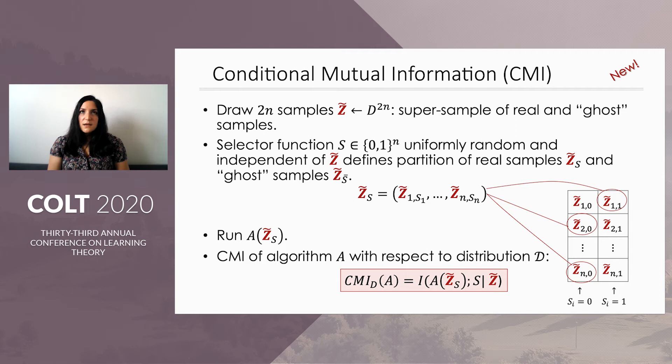Essentially, the CMI asks: how well can we distinguish the real samples from the ghost samples? So if I give you this table, the supersample, and I give you the output of the algorithm, how easily could you tell what S is? How easily could you tell which sample of each pair went into the dataset? In contrast, the mutual information asks: how well can we reconstruct the whole input from the output of the algorithm?